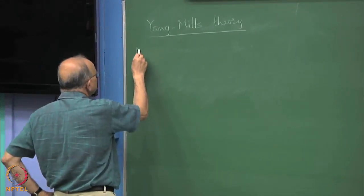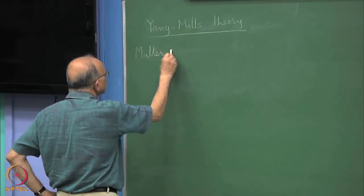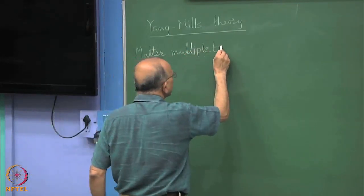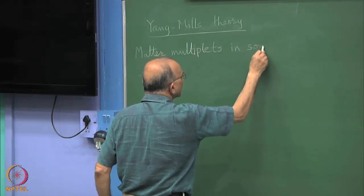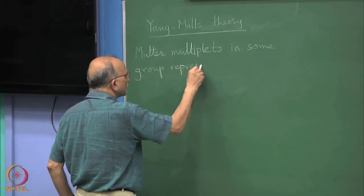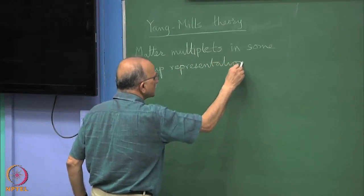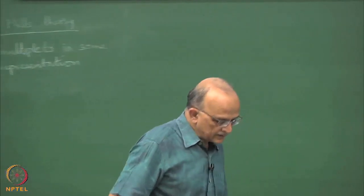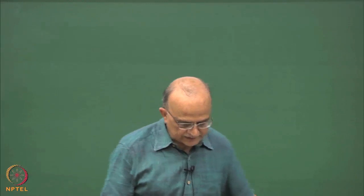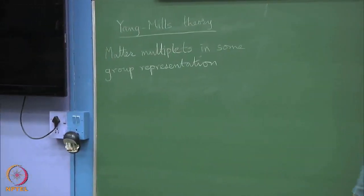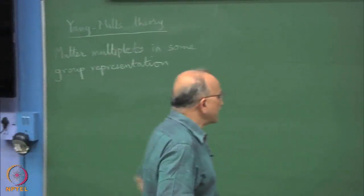So, we have some matter multiplet. This is as I said, the original quite a bit of a revelation that you can actually think of nucleon as essentially two spin projections of the same core particle. This is the innovation due to Heisenberg.